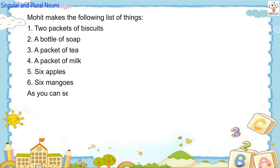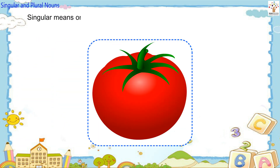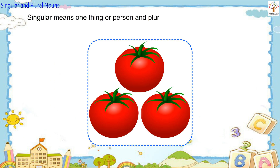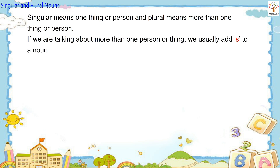As you can see, we add S or ES when we talk about two or more things. Singular means one thing or person and plural means more than one thing or person. If we are talking about more than one person or thing, we usually add S to a noun. This makes it plural.